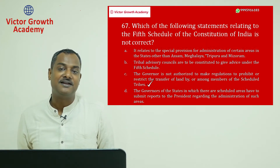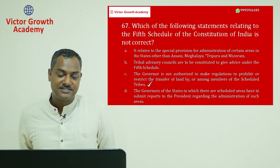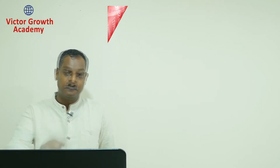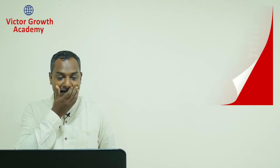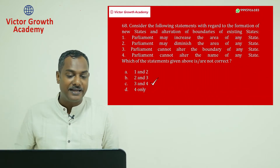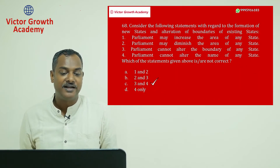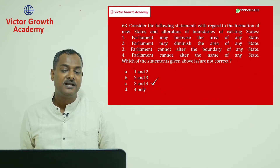The statement that the Governor is NOT authorized to make regulations to prohibit or restrict transfer of land among members of the Scheduled Tribes is wrong — because the Governor IS authorized to make such regulations. Question number 67 answer is C.